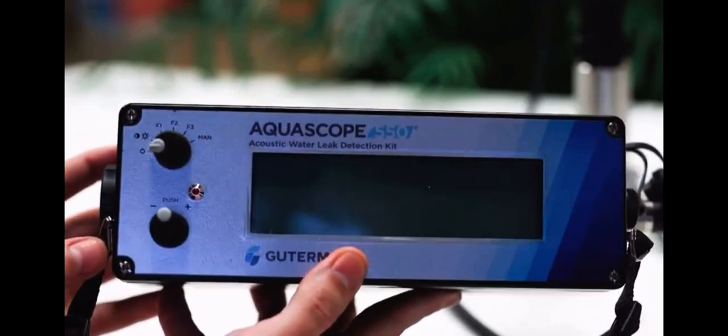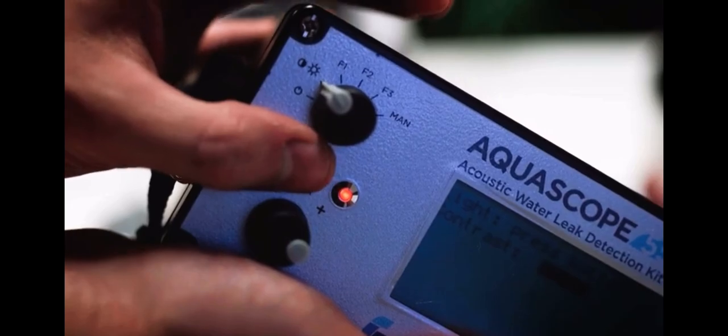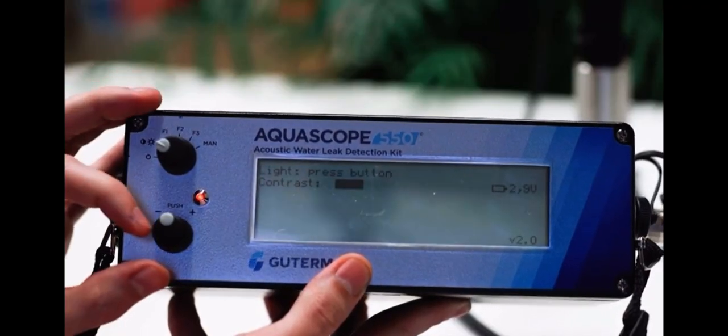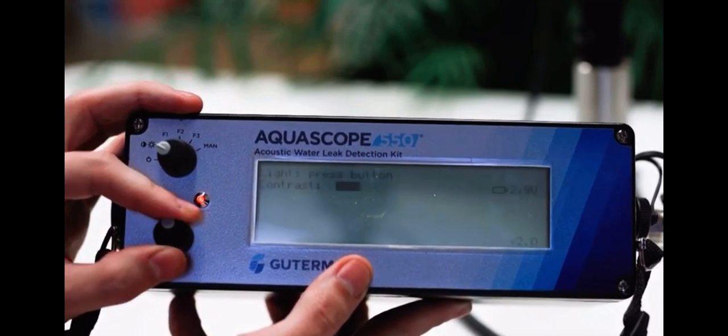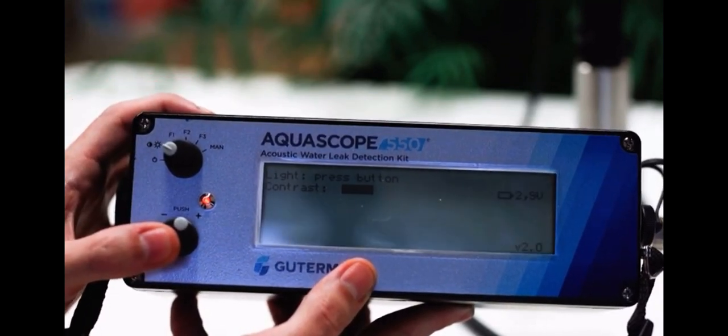Power on the amplifier by rotating the top dial to the right one notch. Adjust the contrast of the screen by turning the bottom dial to the left or right. For low-light listening, click the bottom dial once to turn on the screen backlight.